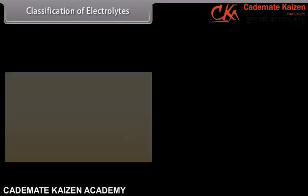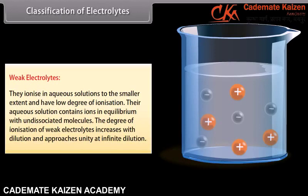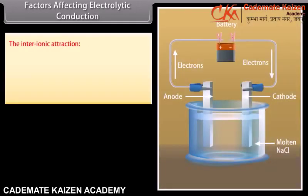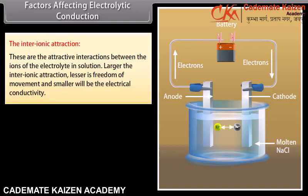Conductors: The substances which allow the passage of electricity through them are called conductors. Conductors are classified into two categories: metallic conductors and electrolytes. Metallic conductors are metallic substances which allow passage of electricity without undergoing any chemical change; conduction is due to movement of electrons in metallic crystals — for example, copper and silver. Electrolytes are substances which allow passage of electricity through their aqueous solutions and also undergo chemical decomposition at the same time; conduction is due to movement of ions — for example, acids and bases.